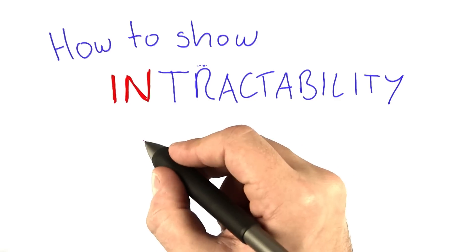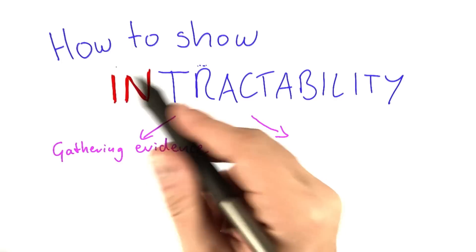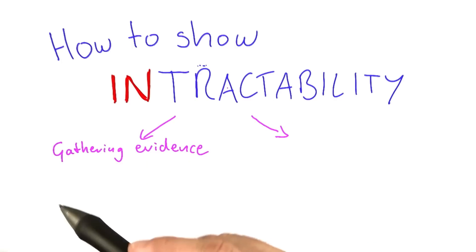And there's actually two different ways we could go about this. The first way we could try to show intractability is by gathering evidence.